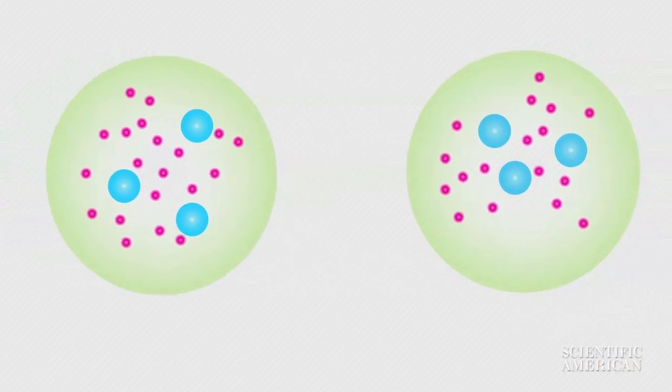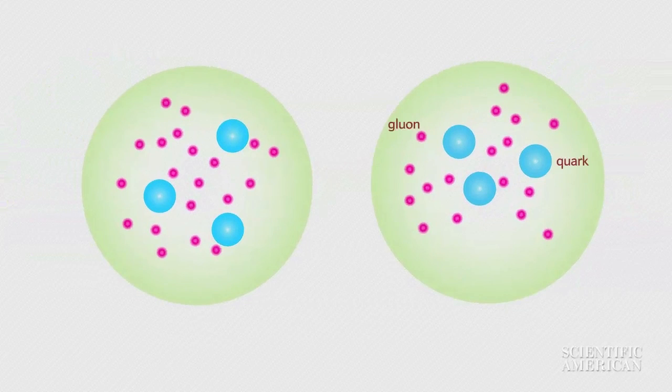The collisions are extremely messy, because protons are composites of smaller particles. Each proton contains three quarks and a number of gluons that bind them together.